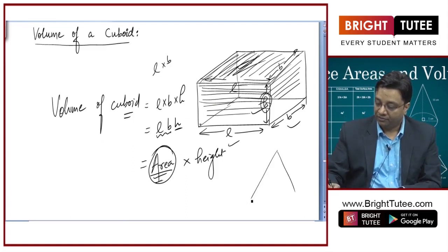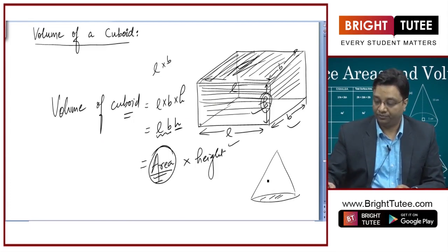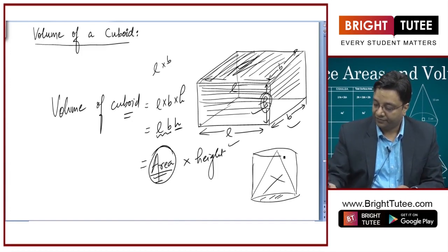It should not be like this. For these figures, we cannot calculate the area of base into height and say that it is the volume. But if this was symmetric all around, let us say, this is cylindrical, this is the base and if you cut it from anywhere, it will give you a circular part.